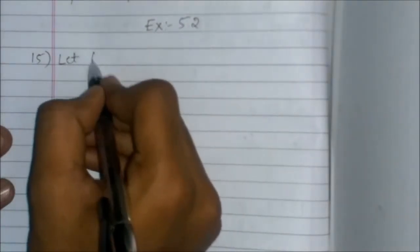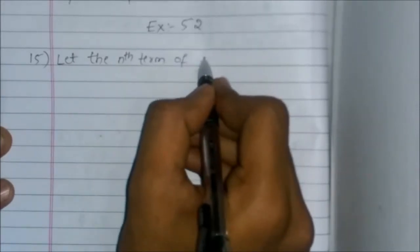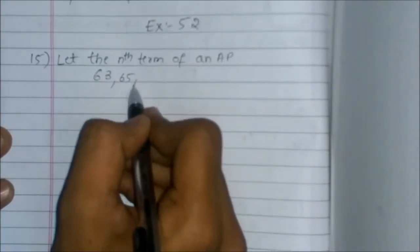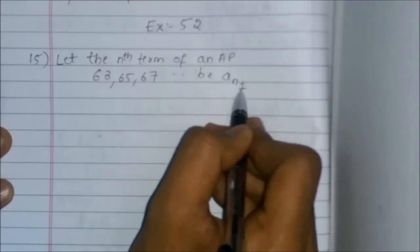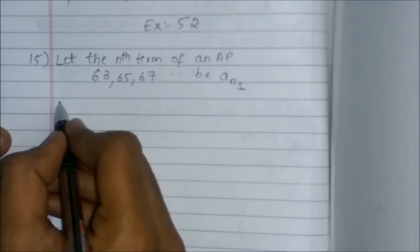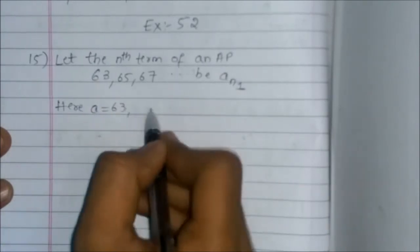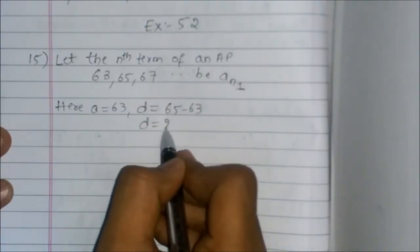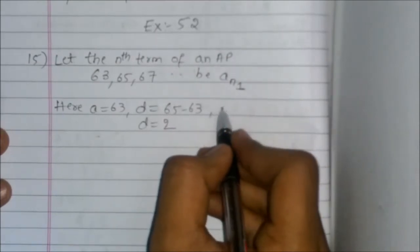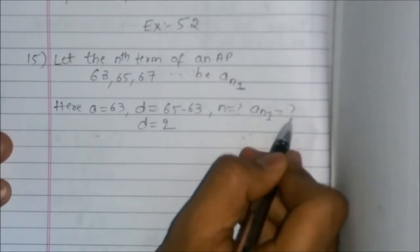Let the nth term of AP 63, 65, 67 be An1. Here we know that a is equal to 63 and d is equal to 65 minus 63, which equals 2. Now, n is unknown and n1 is unknown.